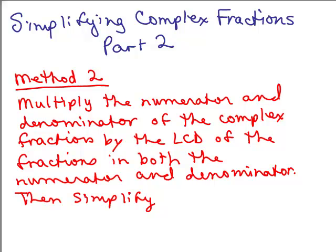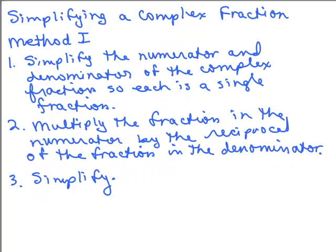This is part 2 of simplifying complex fractions. In part 1, we went over method 1. Here's a reminder of how to do method 1: we simplify the numerator and denominator of the complex fraction so each is a single fraction, then we multiply the fraction in the numerator by the reciprocal of the fraction in the denominator, and then we simplify it.